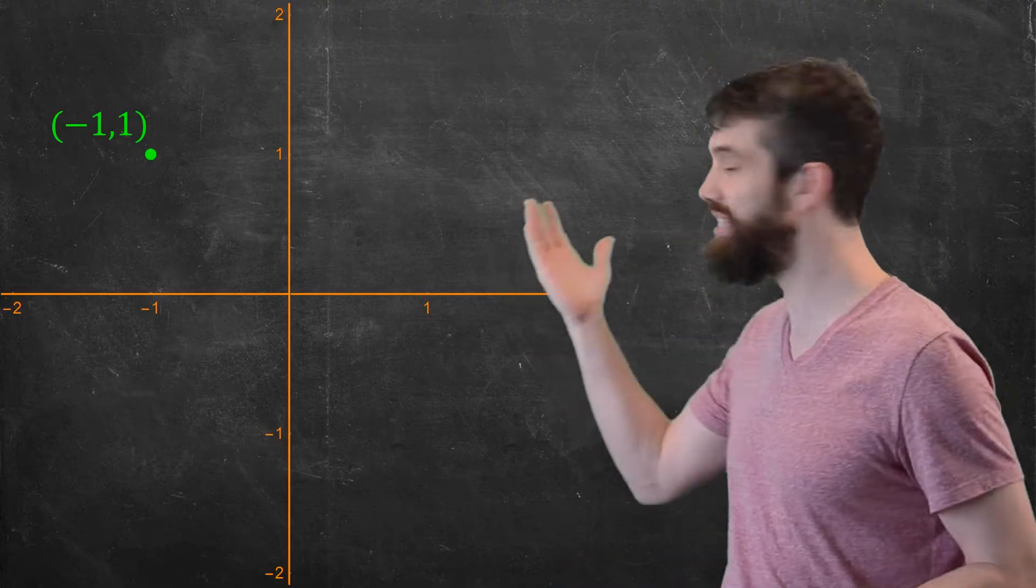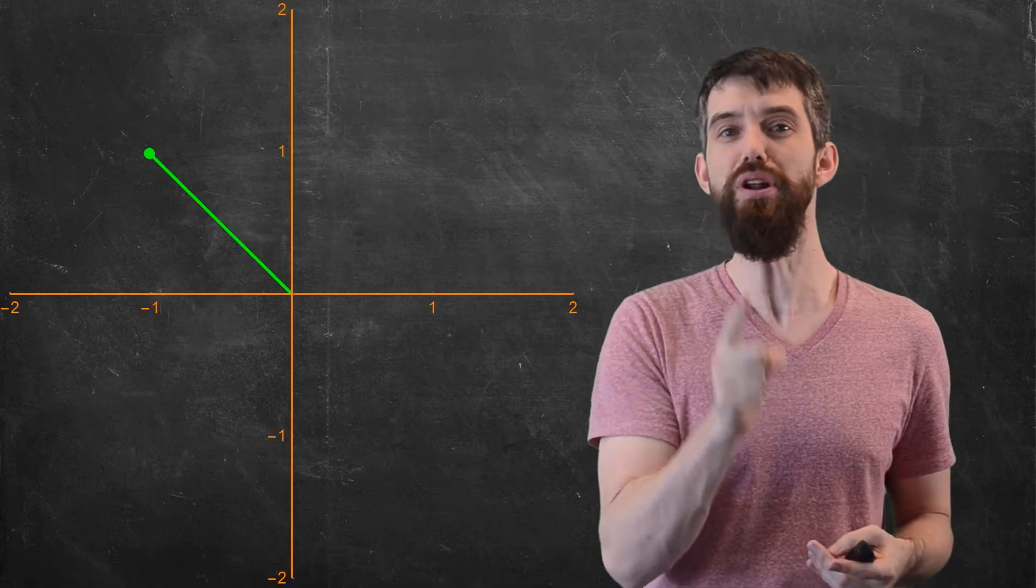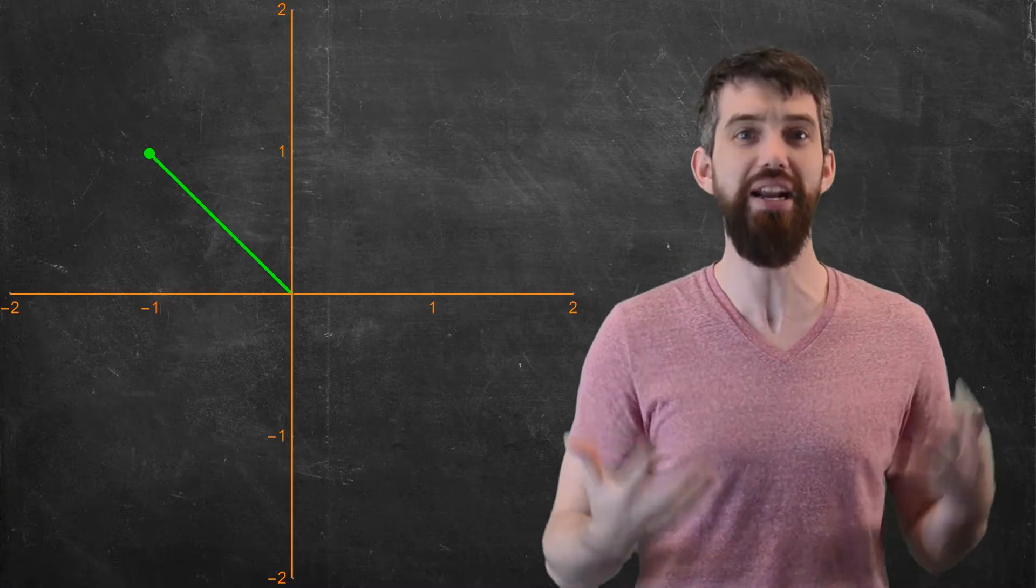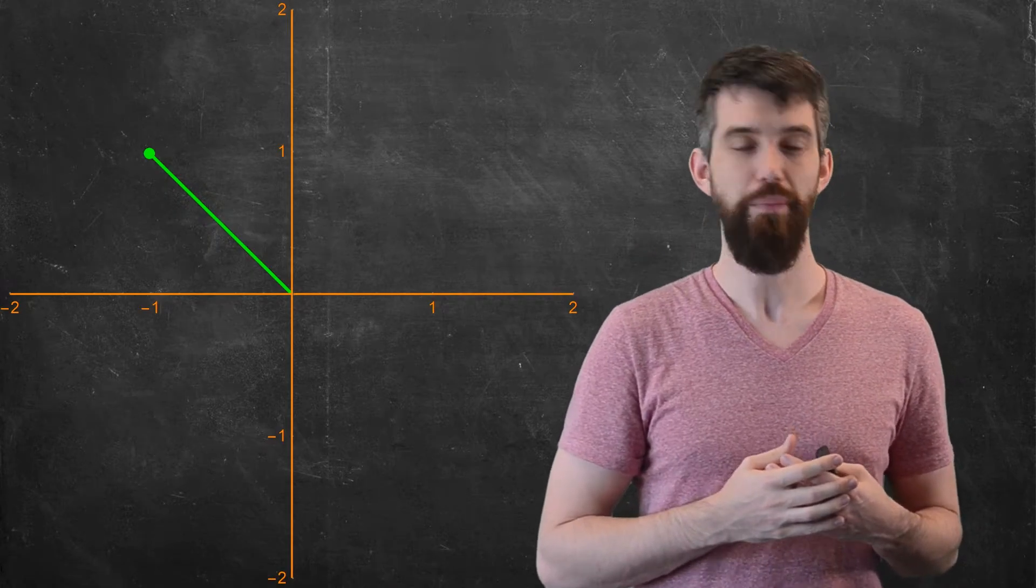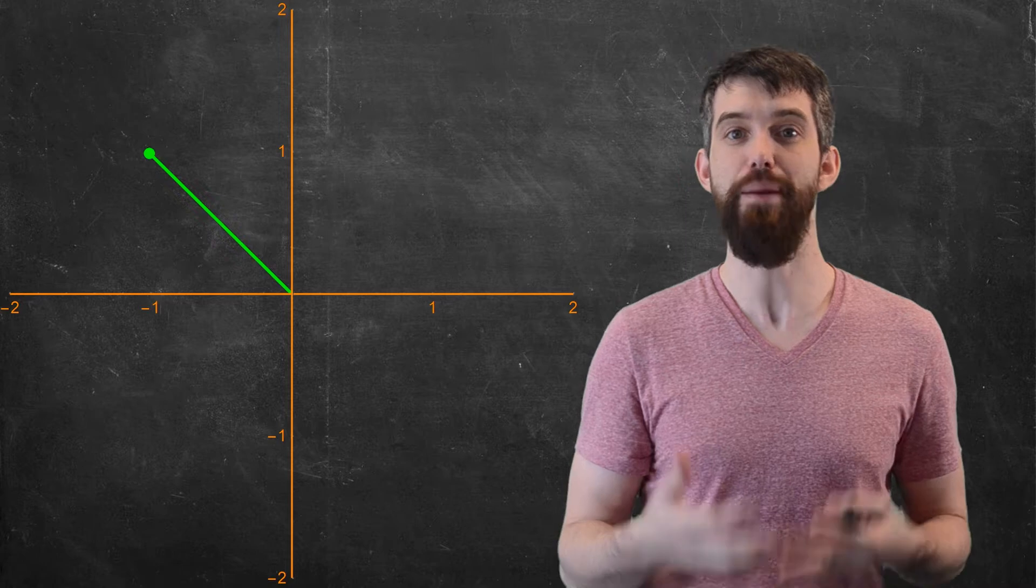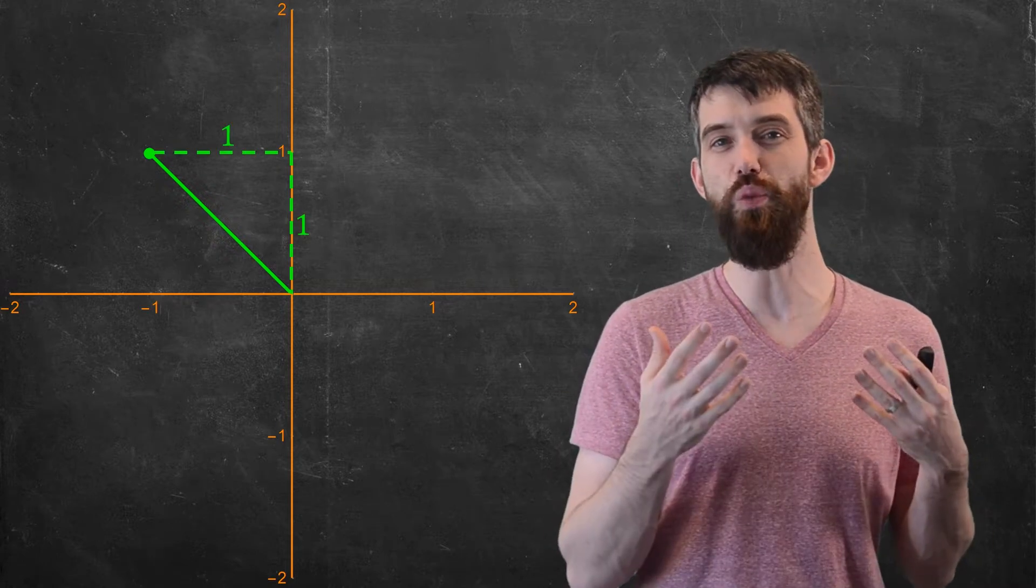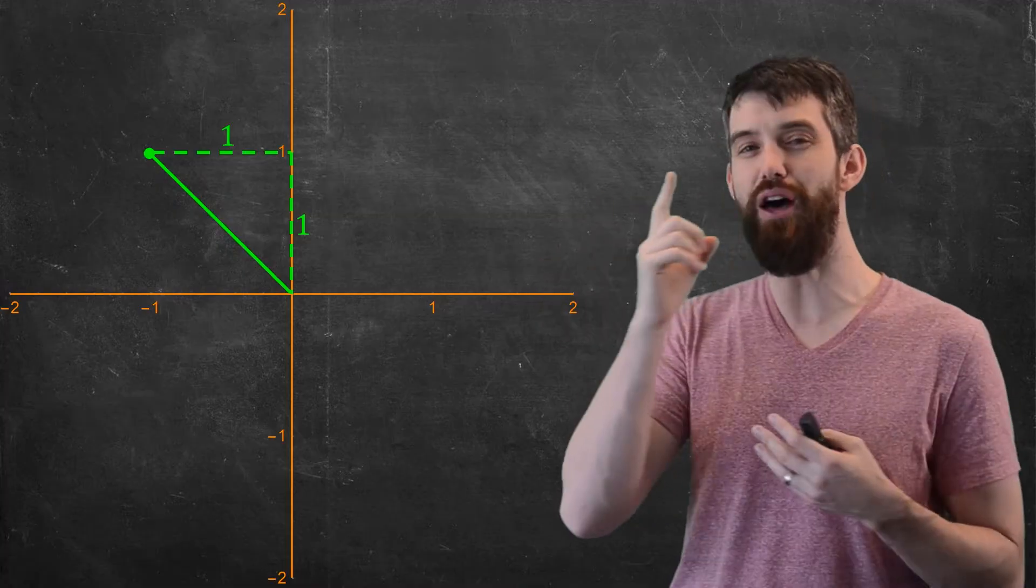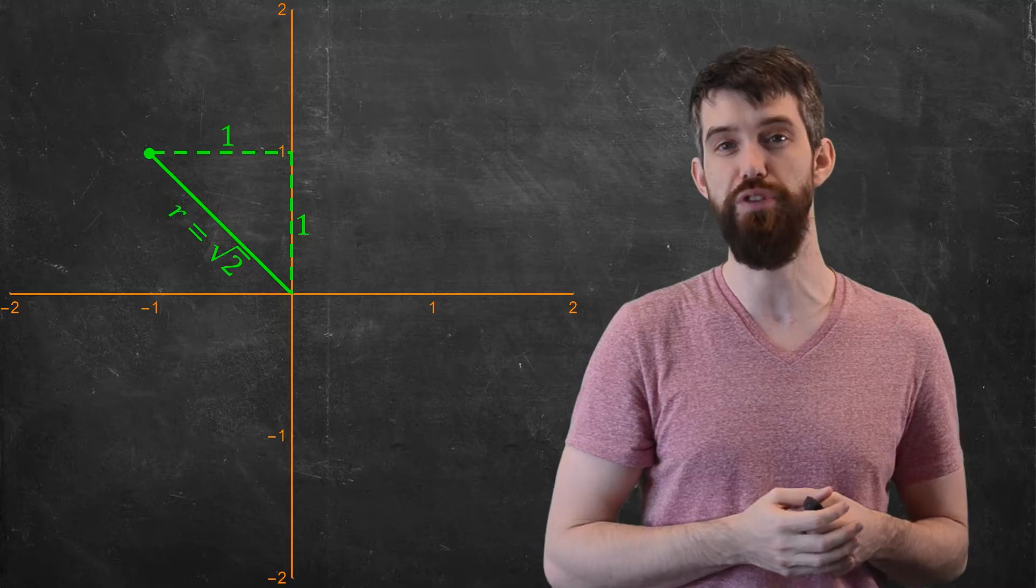I'm going to consider the exact same point, I'm not going to change that at all. But what I'm going to do is draw a little line segment from the origin out to this particular point. Because this point in Cartesian is at (-1, 1), I can create a little triangle like this. It's a triangle where it has a side length of 1 and 1, and therefore a hypotenuse by Pythagoras of just √2.